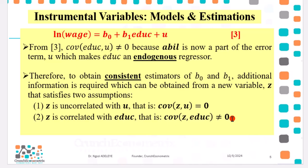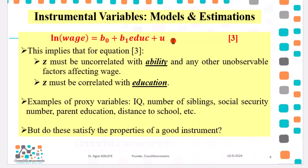Please make sure you have your paper and your pen so that you can jot down some of these things. Now, still on equation three, we have said before that Z must not be correlated with ability or any other factors affecting wage. Secondly, Z must be correlated with education.